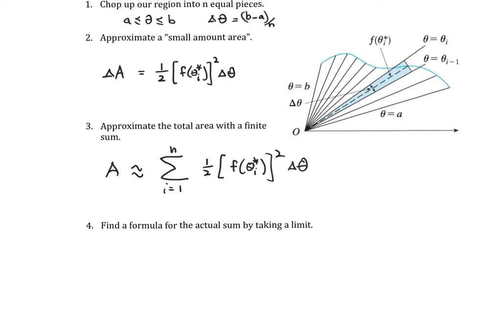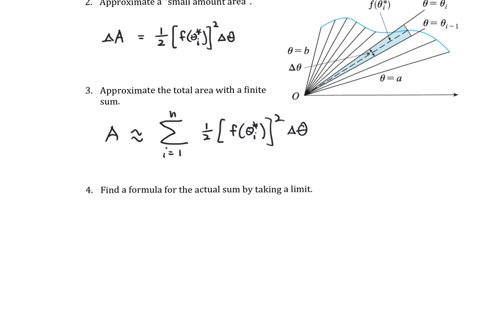To get the actual formula for the area, we are simply going to take a limit. Our area is equal to the limit as n goes to infinity, sum from i equals 1 to n, of one half quantity f of theta sub i star squared delta theta.